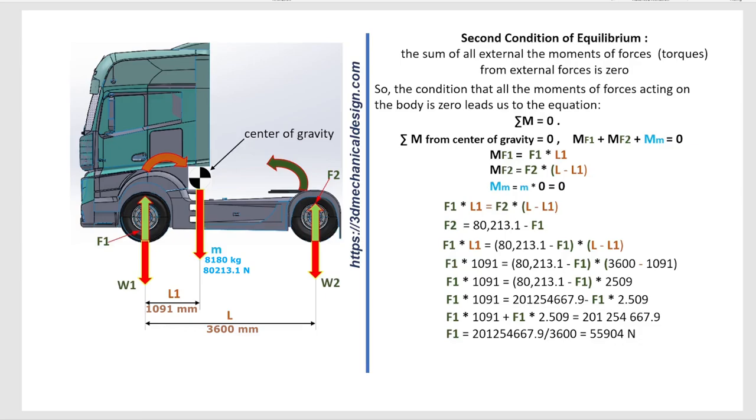F2 equals 80213.1 minus F1 equals 80213.1 minus 55904. F2 equals 24309.1 Newtons.